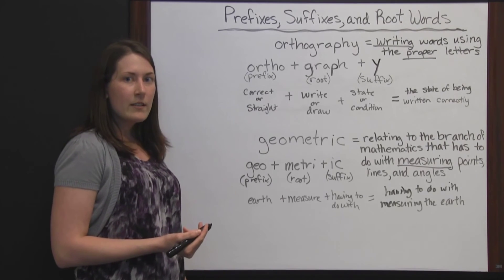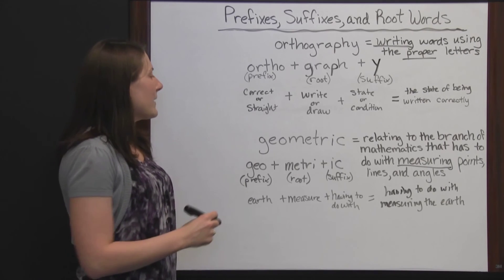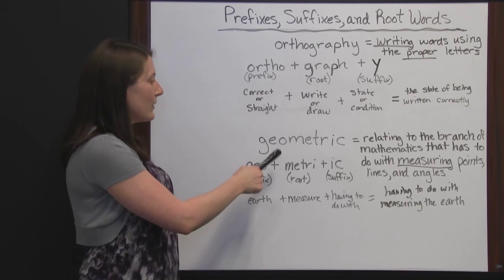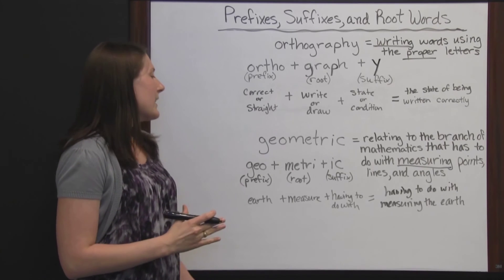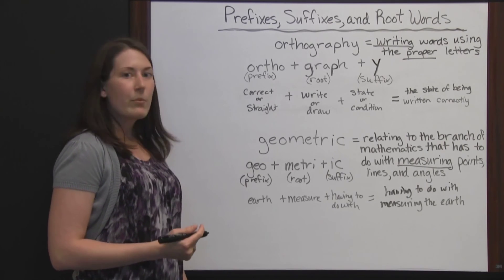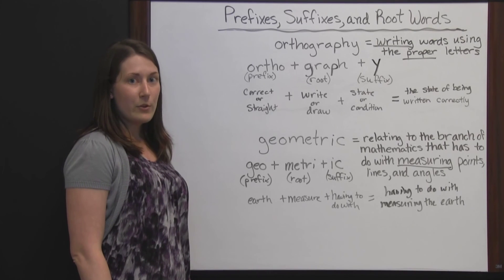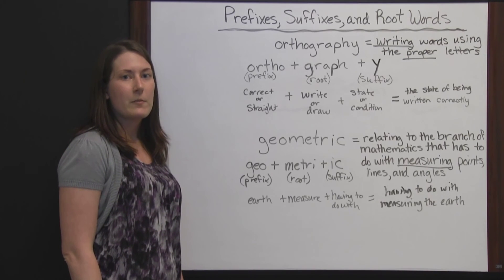So if you ever come across a word that you don't know, first try to figure out what the prefix is, the root word is, and the suffix is, so that you can maybe get an idea of what the word means. You can see how important prefixes, suffixes, and root words are to understanding what a word means.